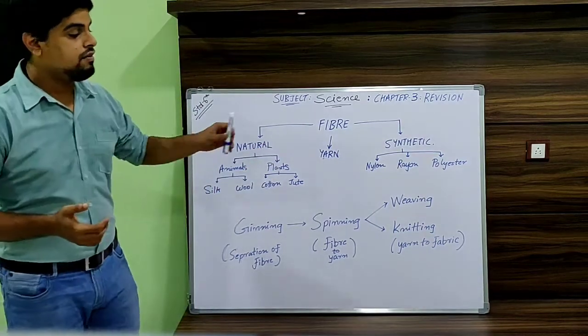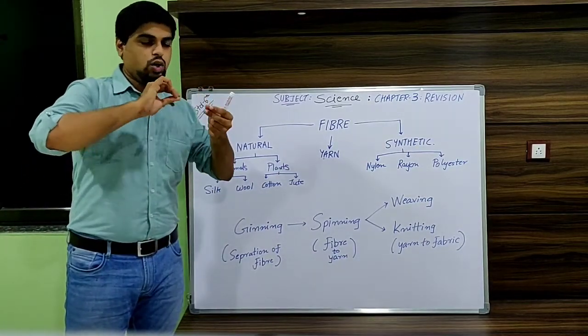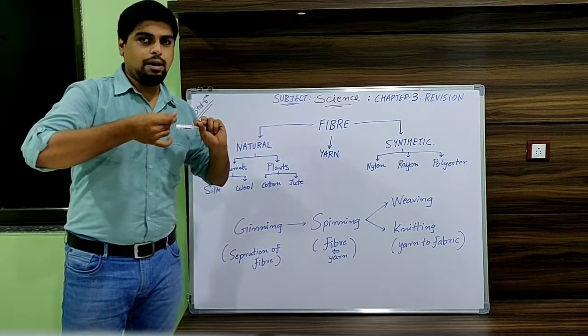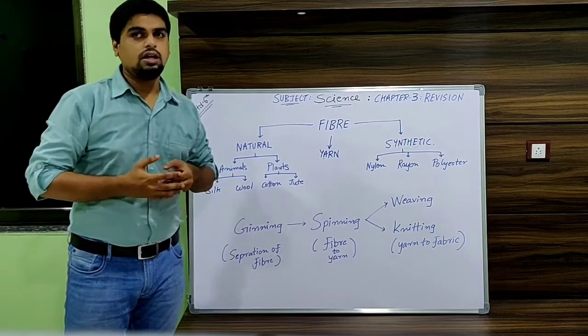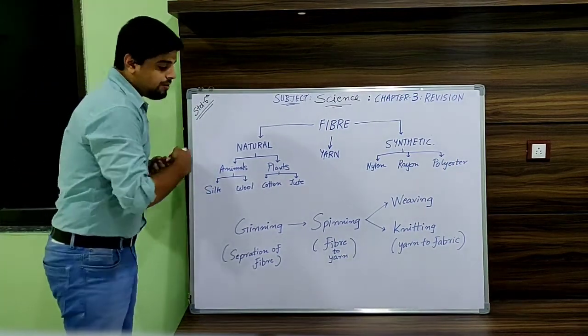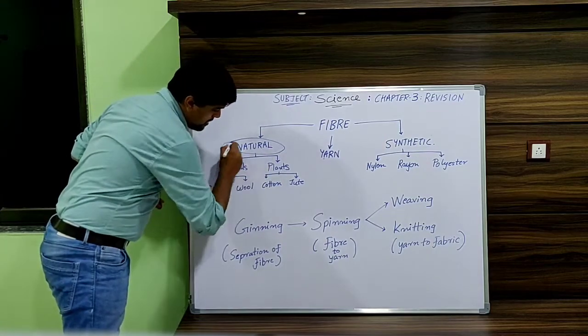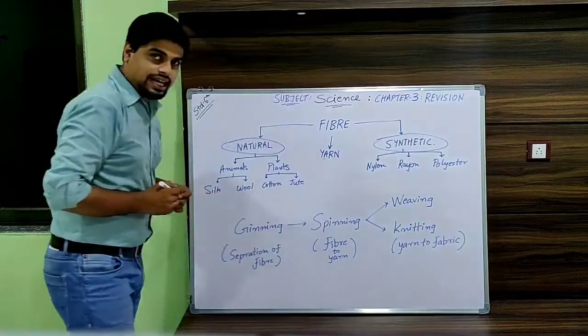After that we have seen what is yarn. If we spin or twist two or more fibers together it becomes yarn, as we have seen in our explanation video. After that there are two types of fiber: one is natural fiber and another is synthetic fiber.